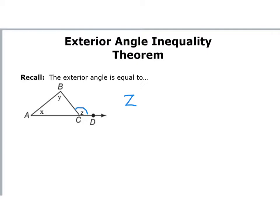We talked about the remote interior. When we say remote, we mean away from — not next to — like we use a remote control that's away from our TV. It's remote from our TV; we don't have to go up to the TV. And we said it takes both X and Y together, or X and Z together, to make Z.